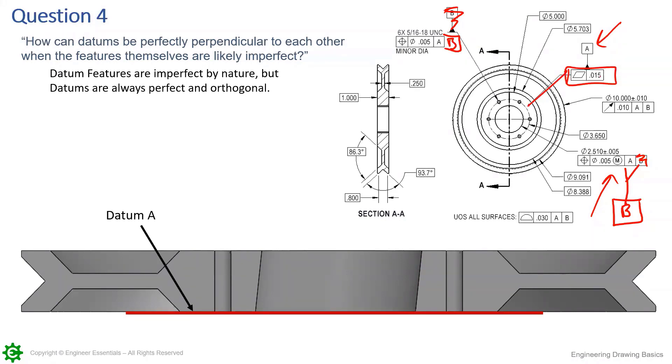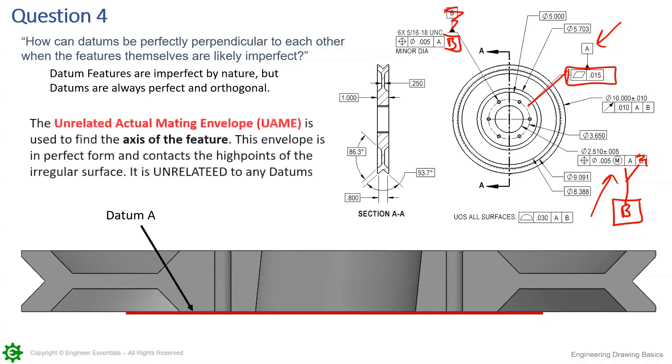Indicated by this flatness right here, datum A is down there. And the unrelated actual mating envelope is going to be used to create the axis of this feature. It creates an axis of the feature and what it does is it expands and captures the high points of that surface.